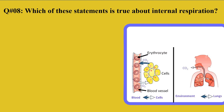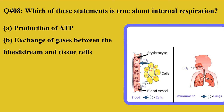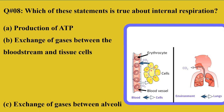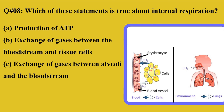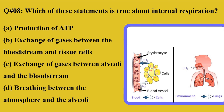Question number 8: Which of these statements is true about internal respiration? A: production of ATP, B: exchange of gases between the bloodstream and tissue cells, C: exchange of gases between the alveoli and the bloodstream, D: breathing between the atmosphere and the alveoli.